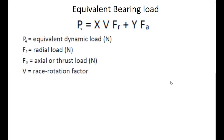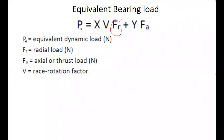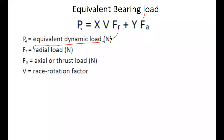The first formula, on page 15.2 of the Bhandari Design Data Book, is the equivalent bearing load P. Here, Fr is the radial load and Fa is the axial load. X is the radial load factor — it is associated with Fr — and Y is the axial load factor, associated with Fa.